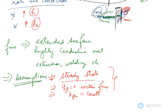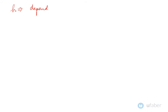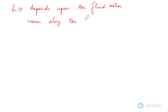The value of the convective heat transfer coefficient h varies along the fin length as well as its circumference, and its value at a point is a function of the fluid motion at that point. The value of h depends upon the fluid motion at a particular point and varies along the fin length. The value of h is much lower at the fin base compared to the fin tip.